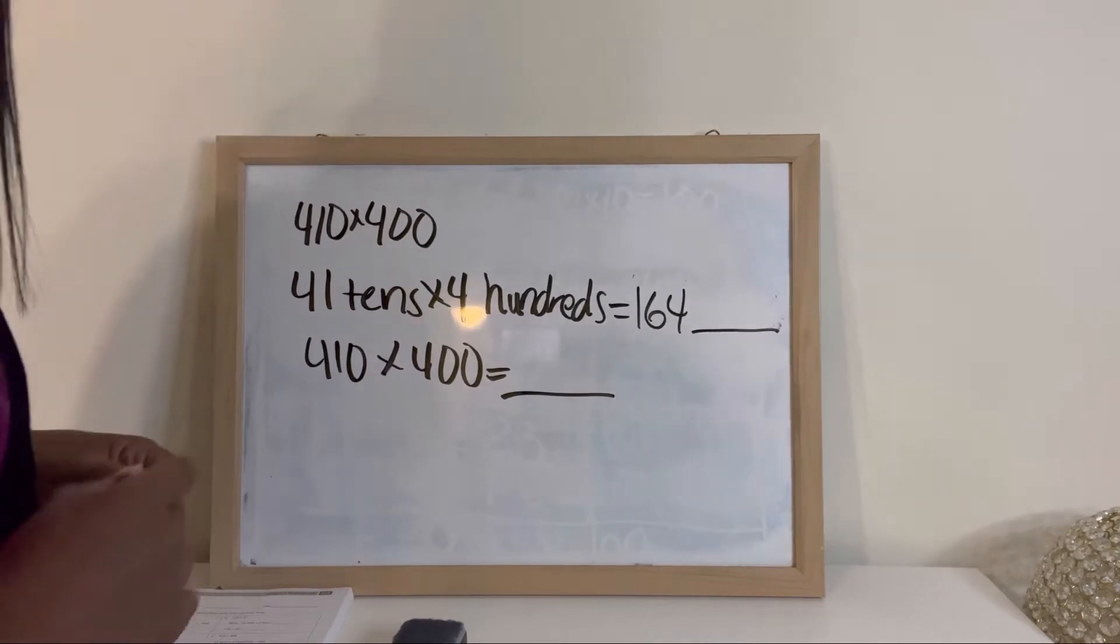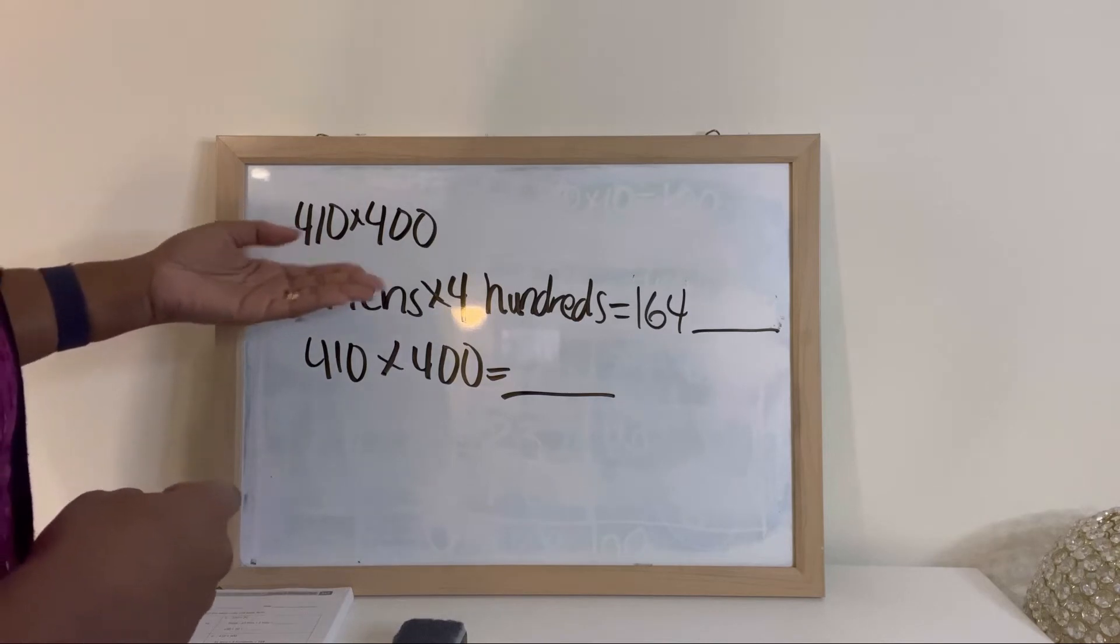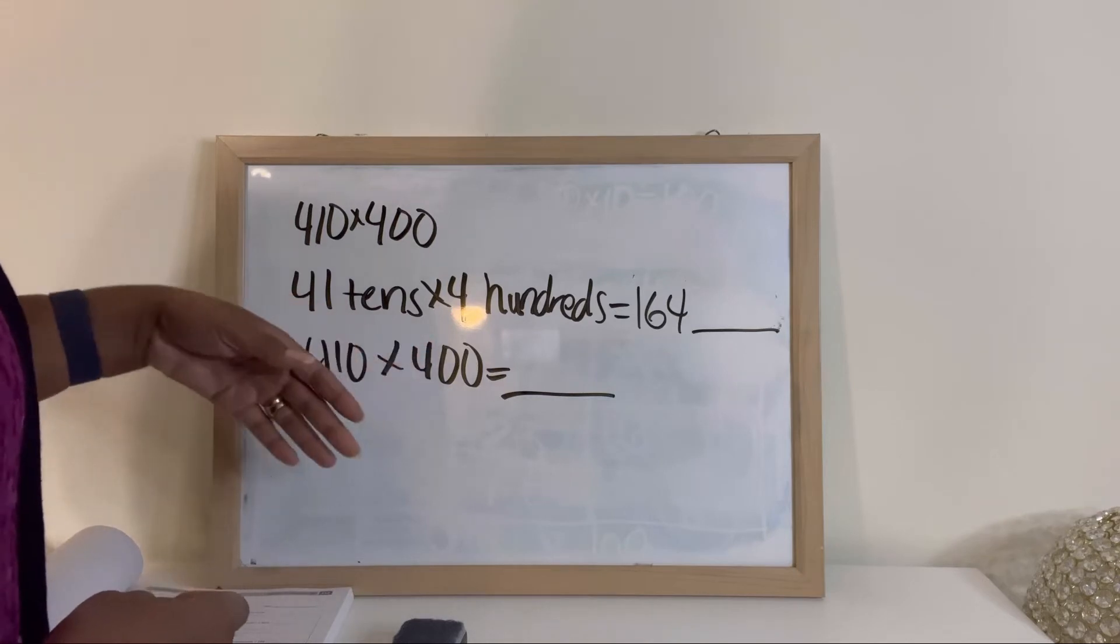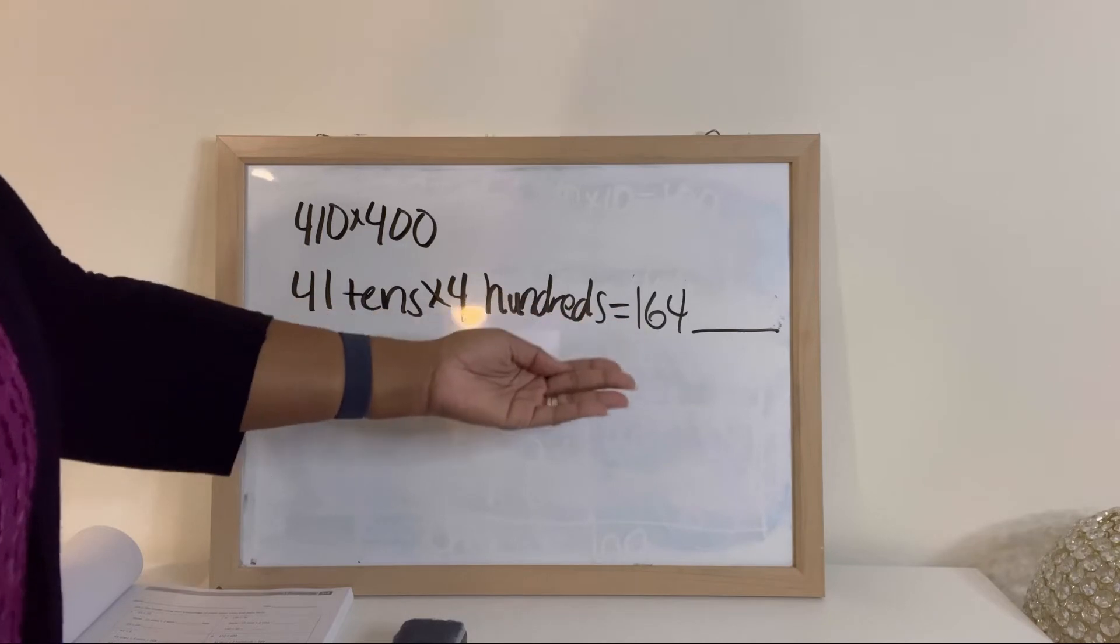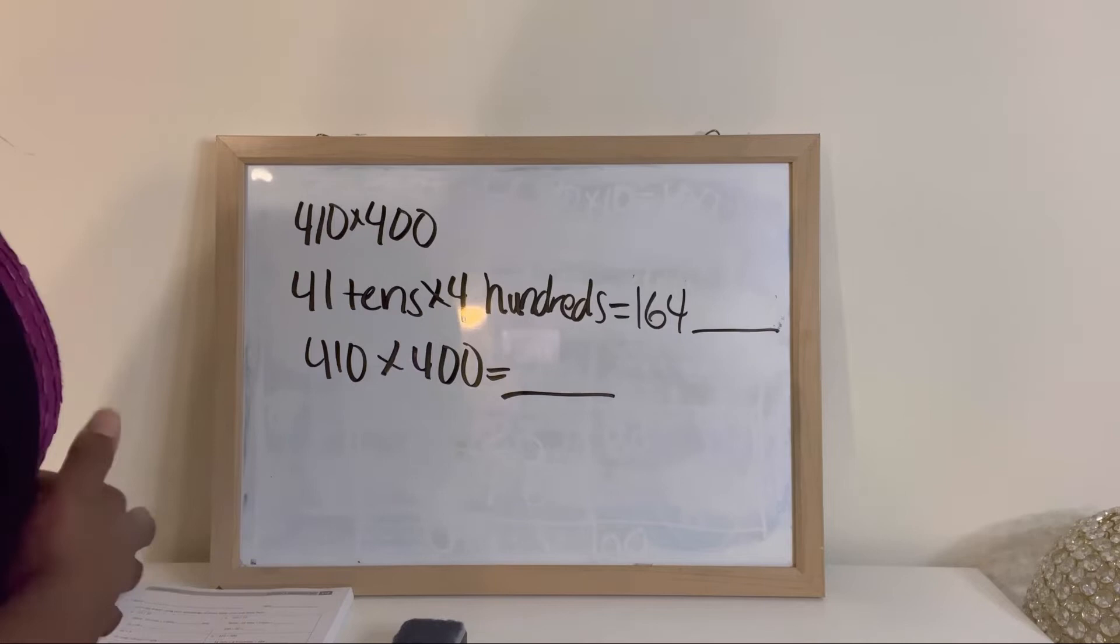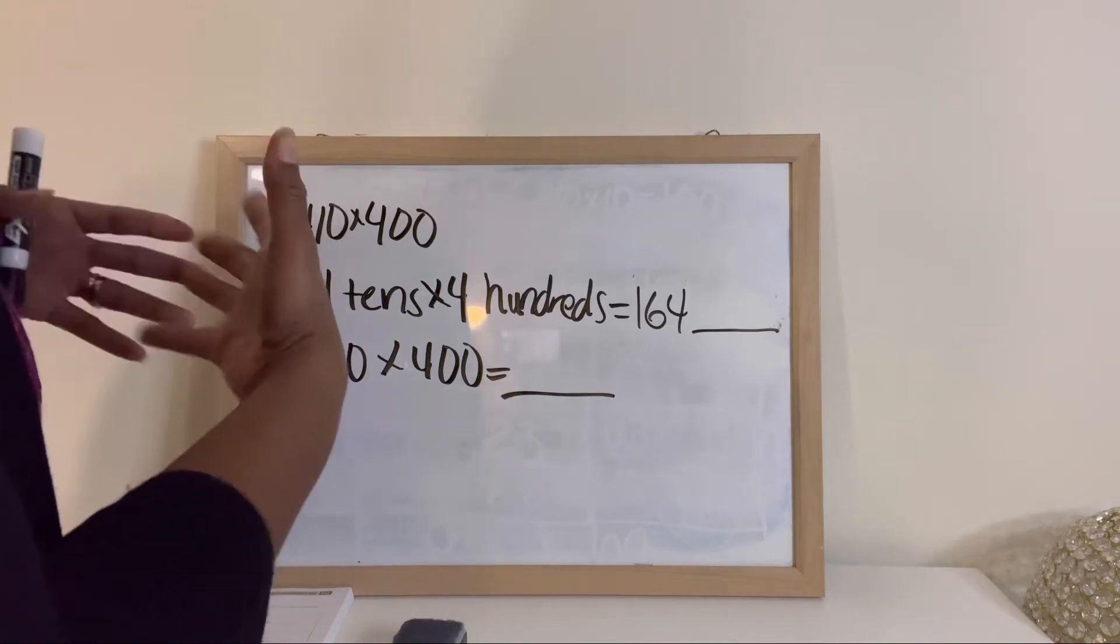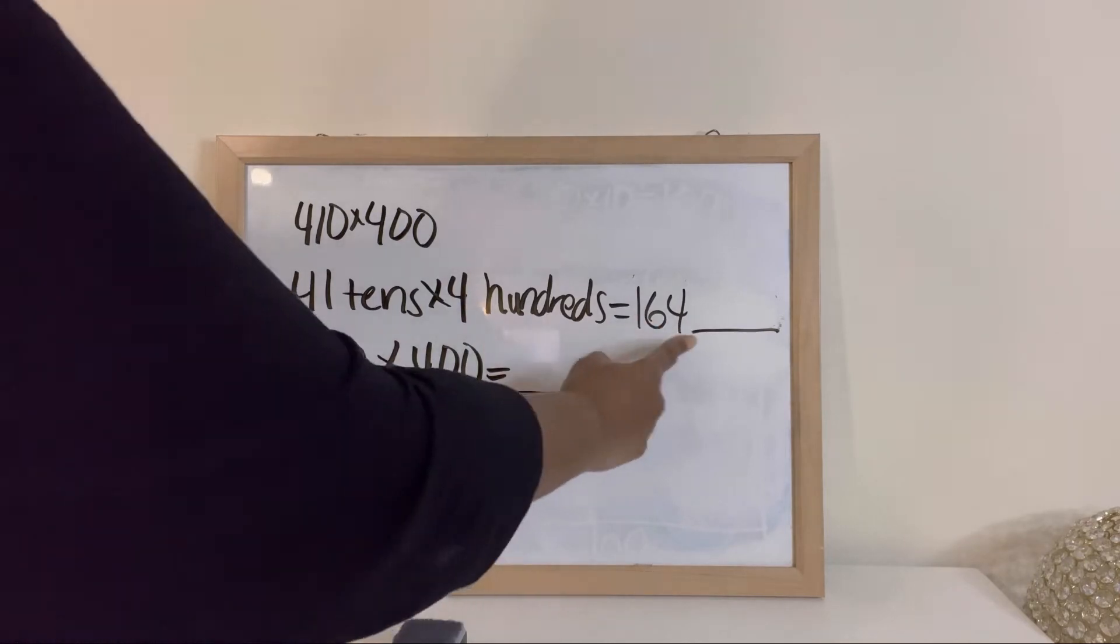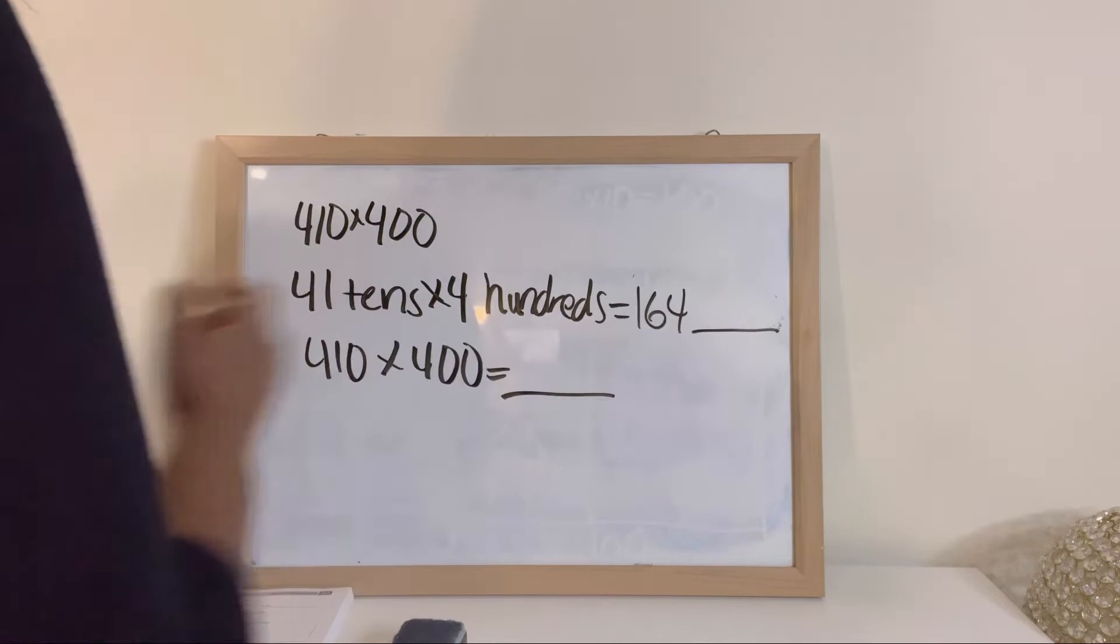In the homework, students have an example similar to this. So you have 410 times 400. So 410 is 41 tens times 400, in standard form written as 400 hundreds, equals 164 blank. They have already provided us with the answer. We just got to figure out what are we going to put here for our units.